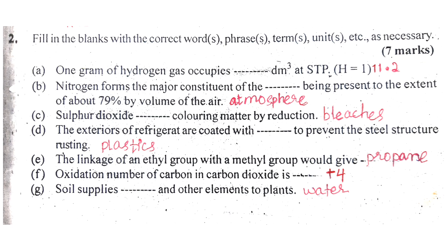Number two — fill in the blanks. Number A: One gram of hydrogen gas occupies how many dm³? Hydrogen gas has a molar mass of 2 grams. One gram of hydrogen gas occupies 22.4 dm³ at STP, which is 11.2 dm³.